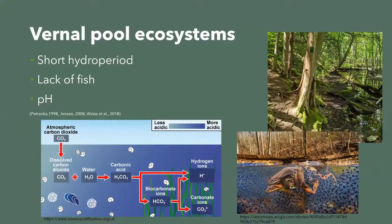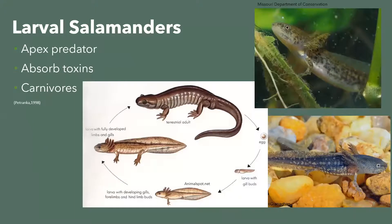Larval salamanders are the apex predators in vernal pool ecosystems, in addition to larval dragonflies. They eat almost anything smaller than their mouth, mainly zooplankton, insect larvae, tadpoles, and other smaller salamanders. Just like their adult form, larval salamanders have permeable skin that can absorb toxins, making them very susceptible to herbicides, pesticides, and shifts in pH — making them a prime bio-indicator of ecosystem health.